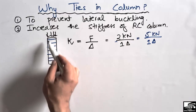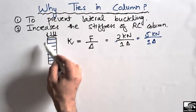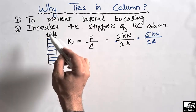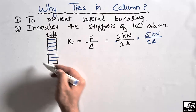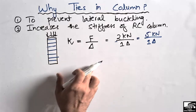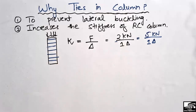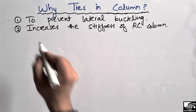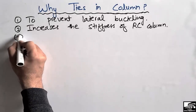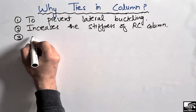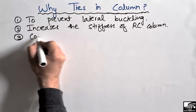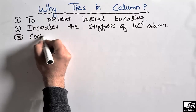The lateral ties increase stiffness because they help confine the main bars and prevent the concrete from failing earlier. The third reason for ties in a column is that they provide confinement of the main bars.